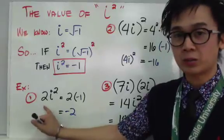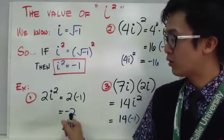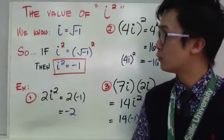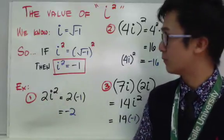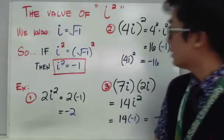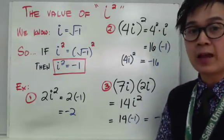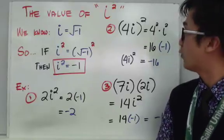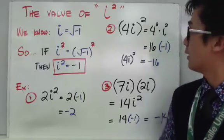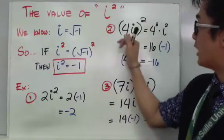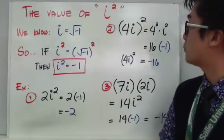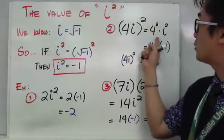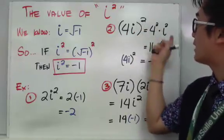So from an imaginary number, you now have a real number — that's what happens when you multiply i times i. For example 2, we have the quantity 4i raised to the second power. When we have an exponent of 2 on the term 4i, we can distribute the exponent using the law of exponents, giving us 4 raised to 2 times i raised to the second power.